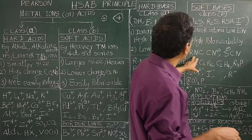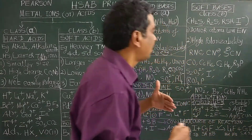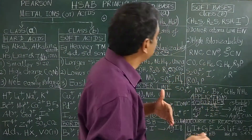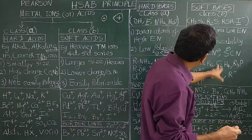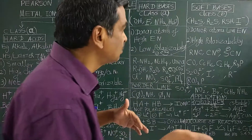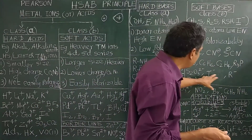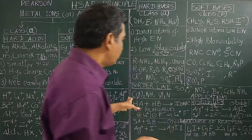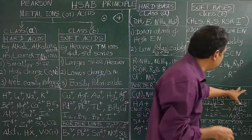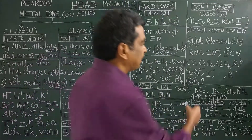Examples of soft bases are RNC (isocyanide), CO (carbon monoxide), alkenes, benzene ring — which are electron-rich π-donors with six π-electrons. Alkenes also consist of π-electrons, making them easily polarizable. Other soft bases include phosphine, thiosulfate ion, I−, R− and phosphorus-donor ligands.